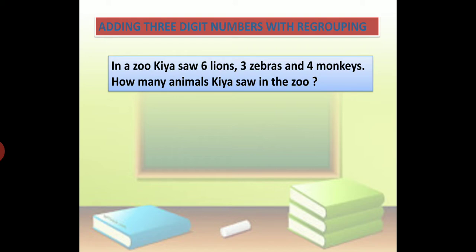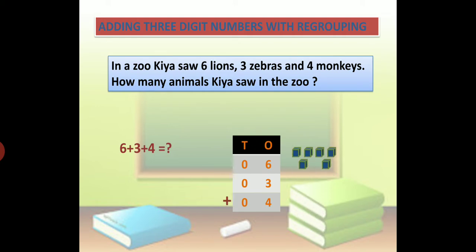So we have to add. We have to first add 6 plus 3 plus 4, and we have to find the sum. Now we have to arrange and then put the sign. After that, we put 6 cubes of ones, then 3 ones, and then 4 ones. Now how to add? Let's see.